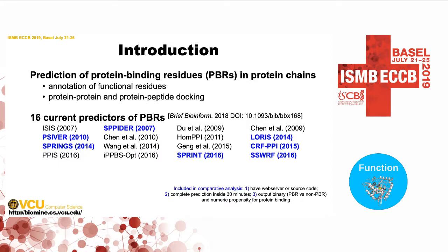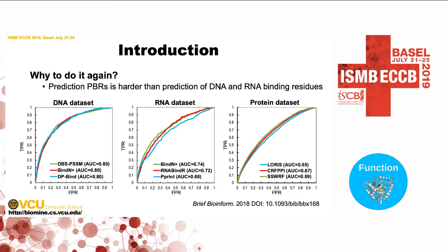The first thing we did at that point was to ask: should we actually do that? The survey we did was to evaluate these tools comparatively and figure out whether there's a need for another tool. What we found is two things. Number one, prediction of protein-binding residues is more difficult than the prediction of other types of binding ligands. So if you want to identify nucleic acid-interacting residues, that's actually much easier — comparatively, this is a much harder problem.